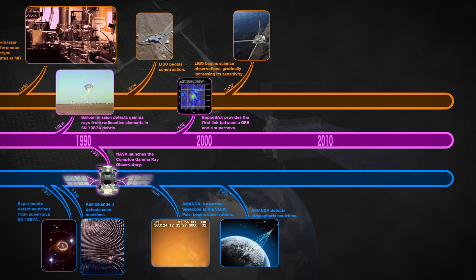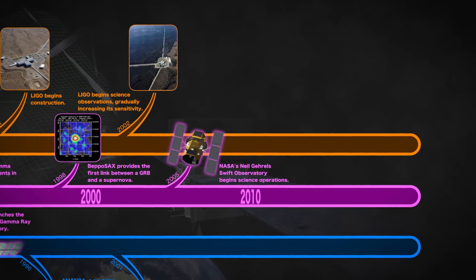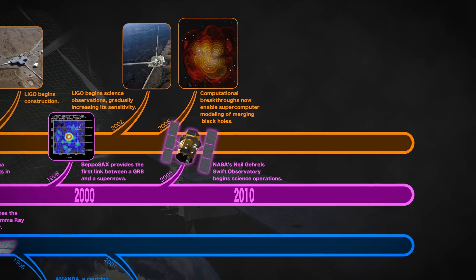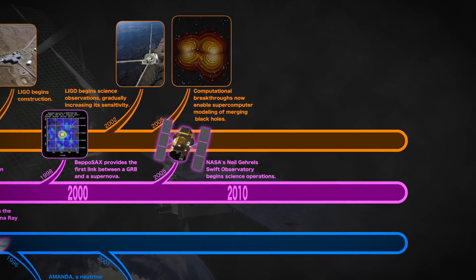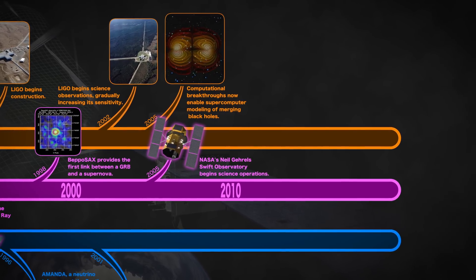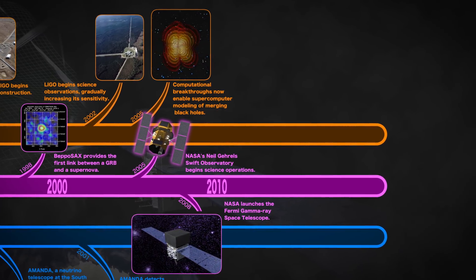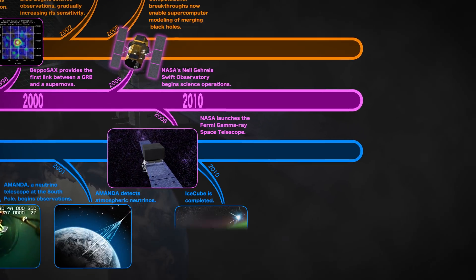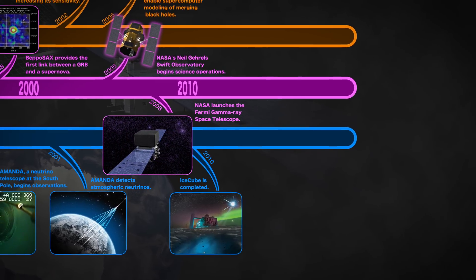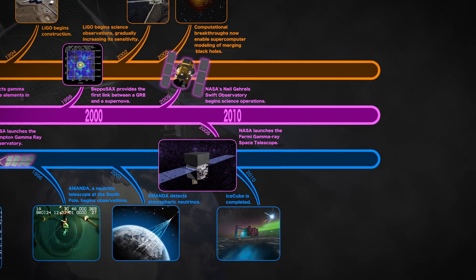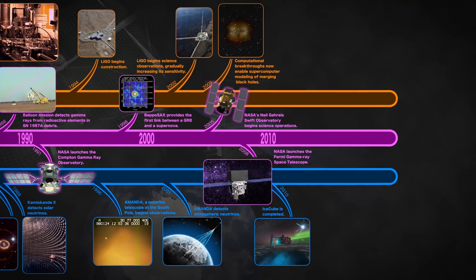In 2005, NASA's SWIFT satellite showed that short gamma ray bursts likely come from merging neutron stars. Soon after, NASA launched Fermi, providing our best-ever view of the gamma ray sky. AMANDA morphed into IceCube, which was completed in 2010. It monitors a cubic kilometer of ice under the South Pole for neutrinos.